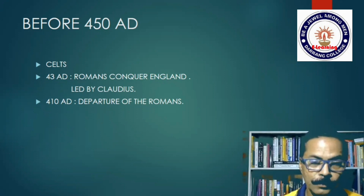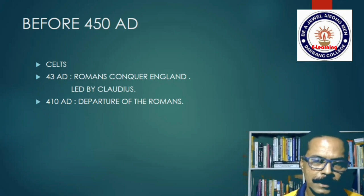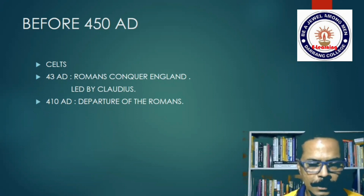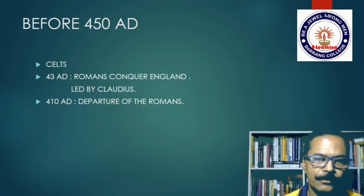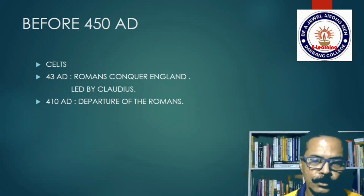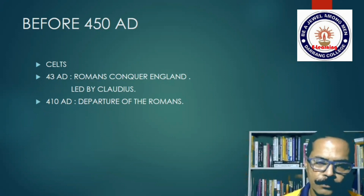In 410, mainly because of two reasons — the relentless attacks of the Angles, Saxons, and Jutes, and civil strife and political turmoil in Rome — the Romans decided it best to decolonize the island and leave. After that, slowly the Angles, Saxons, and Jutes consolidated their control, and by 450 they were surely in power as the rulers of England.